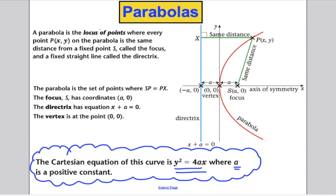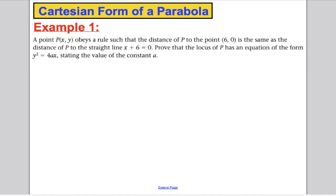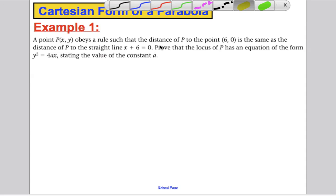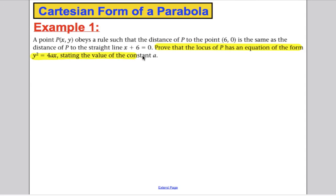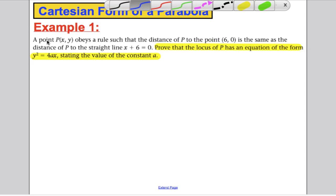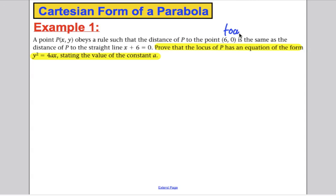Here we go. The question asks you to prove that the locus of P has equation of the form y² equals 4ax, stating the value of a. By observation, the focus is at (6, 0) and the directrix is x plus 6 equals 0, so a equals 6. The general equation is y² equals 4ax, so y² equals 4 times 6 times x, which is 24x.